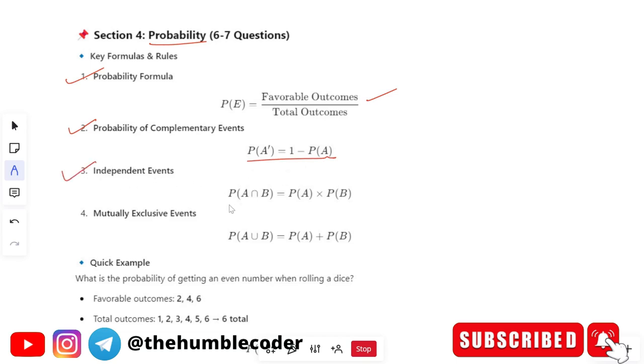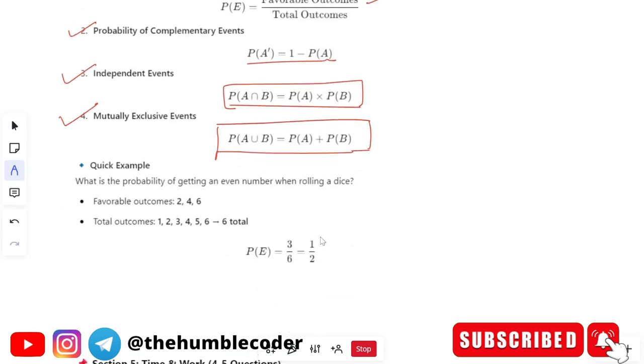Next up we have independent events. So this is the formula for independent events. Next up we have mutually exclusive events. So this is how you can calculate your mutually exclusive events.